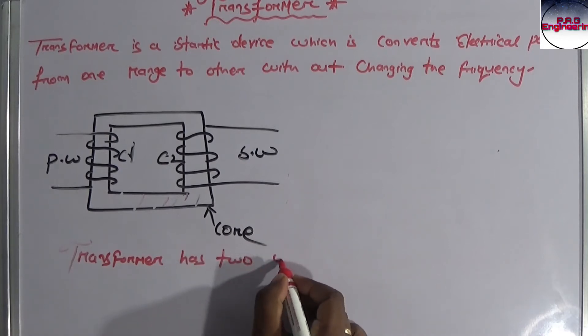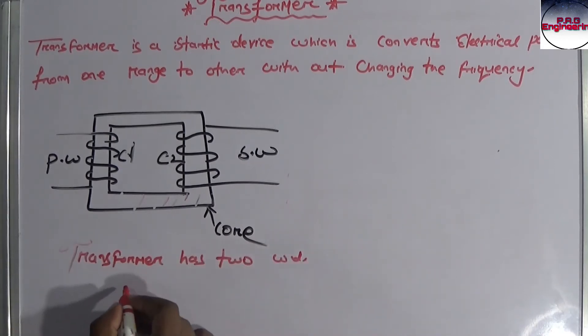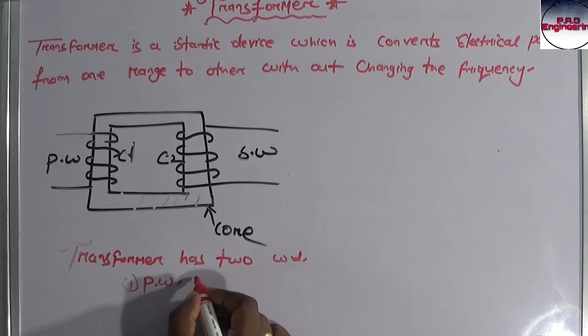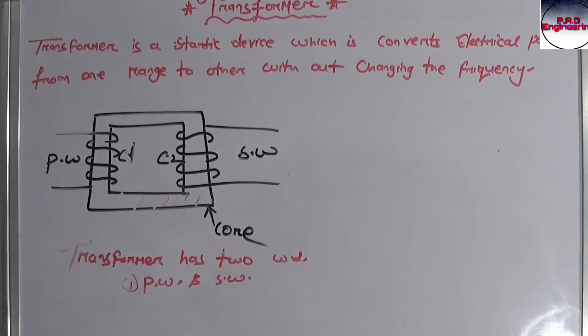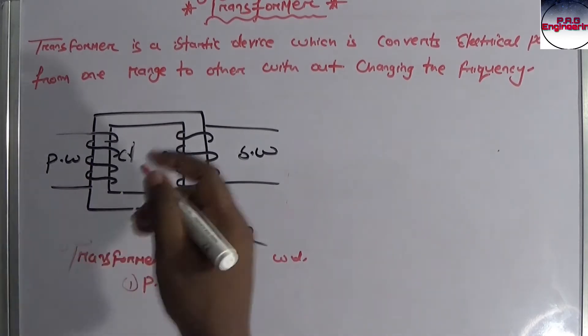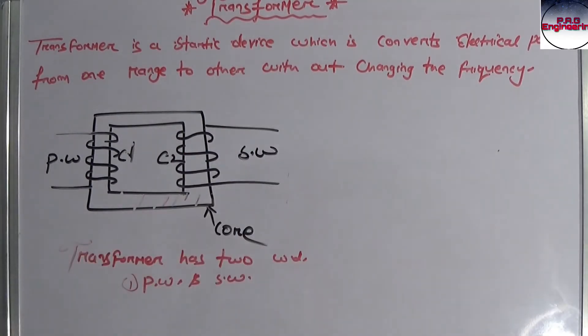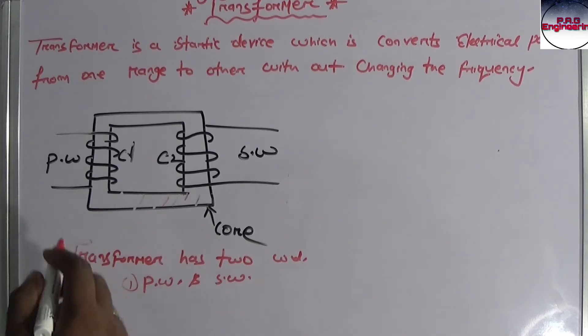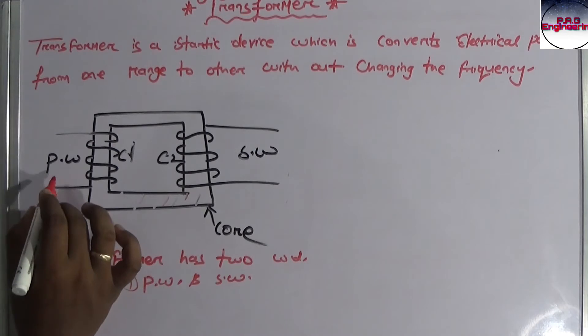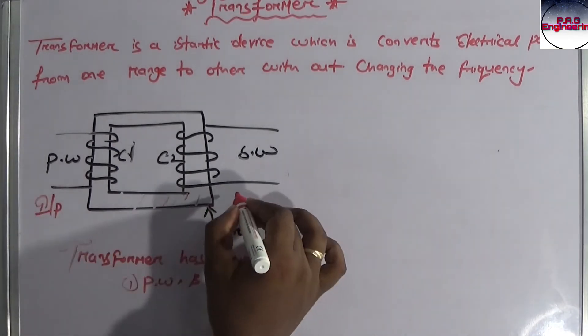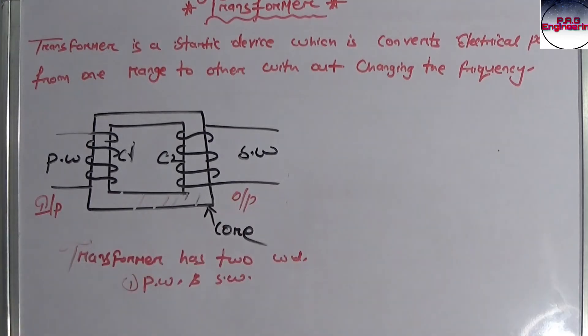Transformer has two windings. One is primary winding, another is secondary winding. The winding which is connected to the input side is known as primary winding. This is the input side and this is the output side.